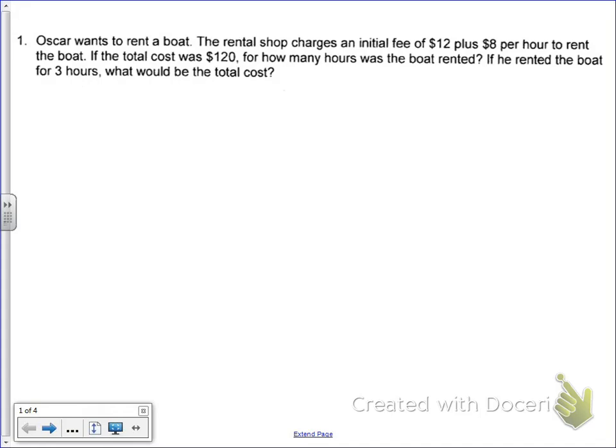So let's look at number one here. Oscar wants to rent a boat. Good job, Oscar. The rental shop charges an initial fee of $12. Okay, I'm going to underline that. That sounds important. Initial fee of $12. And remember, I said initial earlier. Hmm. Alright. The initial fee of $12 plus $8 per hour to rent the boat. If the total cost was $120, for how many hours was the boat rented? And if he rented the boat for three hours, what would the total cost be? So in the problem, they're typically going to give you everything you need to set up an equation before you start figuring out anything else. They're going to give you all the information you need to make an equation before you have to answer the question which is asked, if the total cost was $120, how many hours was the boat rented?